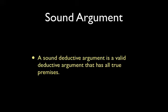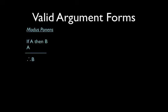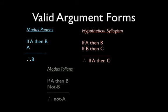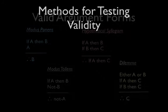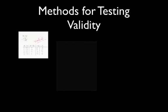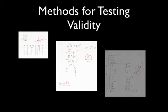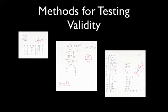A sound deductive argument is a valid deductive argument that has all true premises. There are many deductively valid argument forms, and there are formal methods for determining whether an argument form is valid. You can learn these methods by taking a course on symbolic logic. However, in most philosophy courses, we evaluate deductive arguments informally.